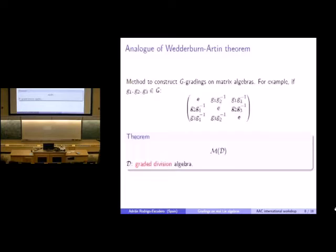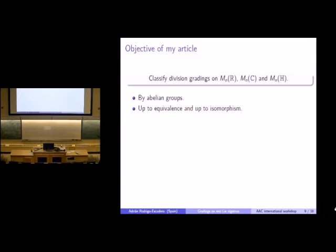What I did is the Frobenius analog: I classified division gradings on finite-dimensional real algebras—that is, on algebras of real matrices, complex matrices, and quaternion matrices—by abelian groups, and this both up to equivalence and up to isomorphism. This completes the classification in the isomorphism case. This analog of Frobenius' theorem had already been done in the algebraically closed case; we are now dealing with the real case.